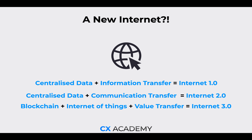Before we start talking about a new Internet, it's important to learn about the evolutions the Internet has actually gone through. Back in the early 2000s, you might consider the Internet simply an information transfer — that's all it really was. It was code, it was information, and it was available, with centralized data. That's Internet 1.0.